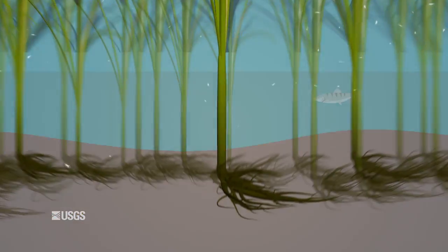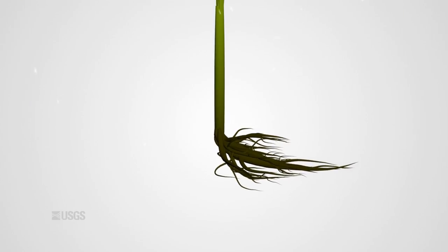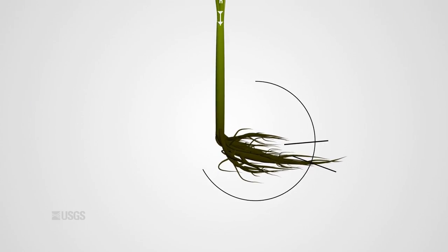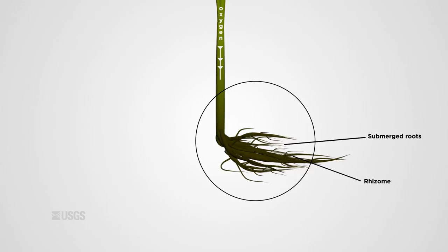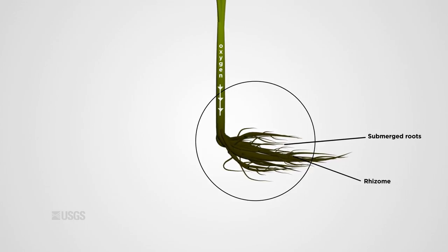It's well adapted to watery environments. Plants can grow in waters up to six feet deep, and a special air ventilation system transports oxygen to the submerged roots and rhizomes.